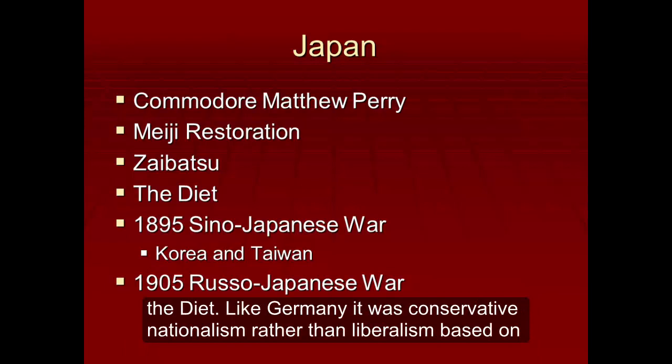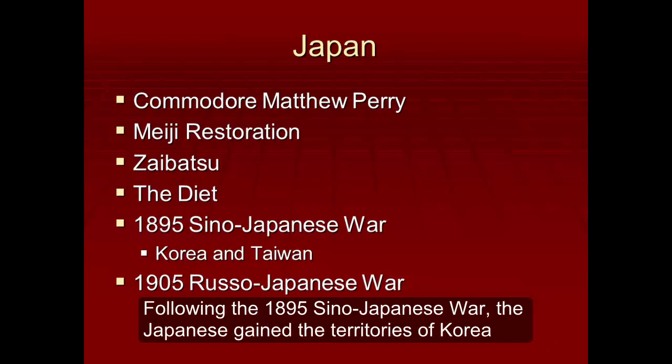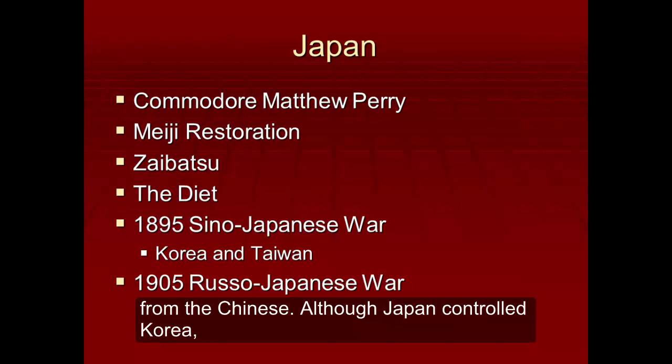The Germans also trained their army and the British gave them naval expertise. Following the 1895 Sino-Japanese War, the Japanese gained the territories of Korea and Taiwan from the Chinese. Although Japan controlled Korea, the King of Korea started to warm to Russia.